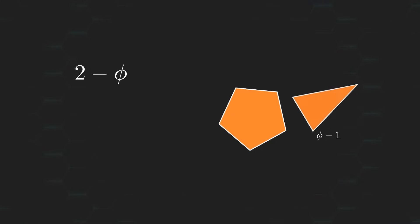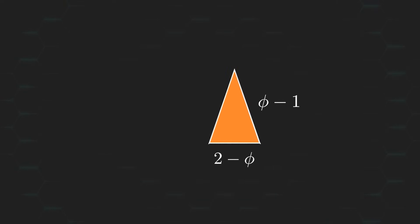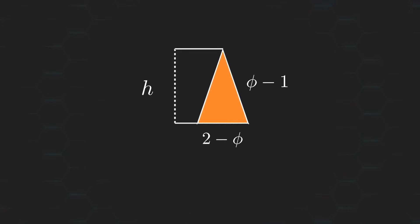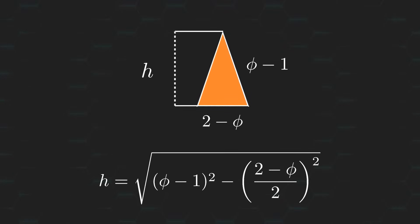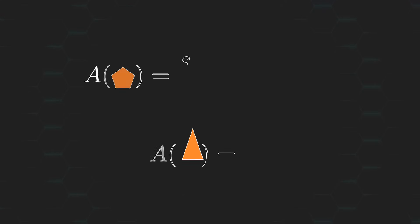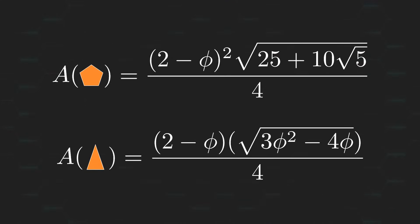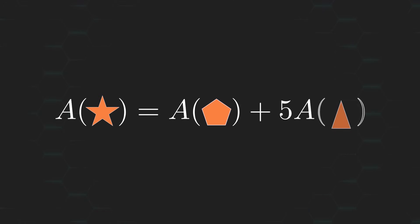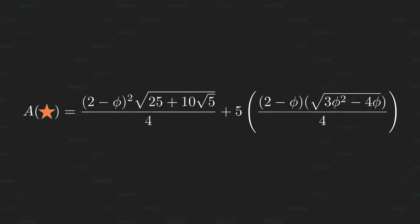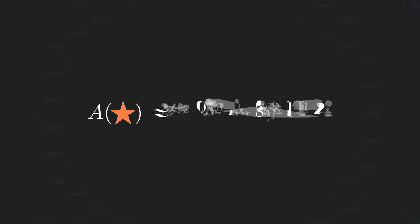Alright, great, we have two shapes and two equations to calculate their respective areas. But first, let's quickly find the height of the triangle using the Pythagorean theorem. Okay, we can finally plug in our values to get the areas of these shapes. And therefore, the area of the star can be calculated as follows. And this whole mess comes out to about 0.812.